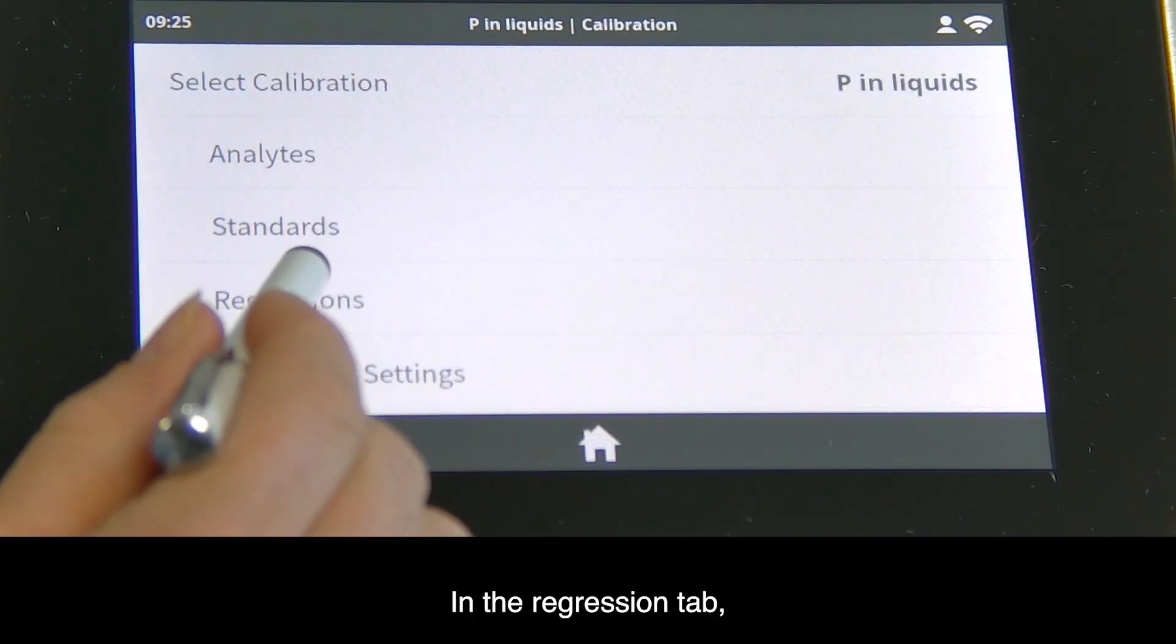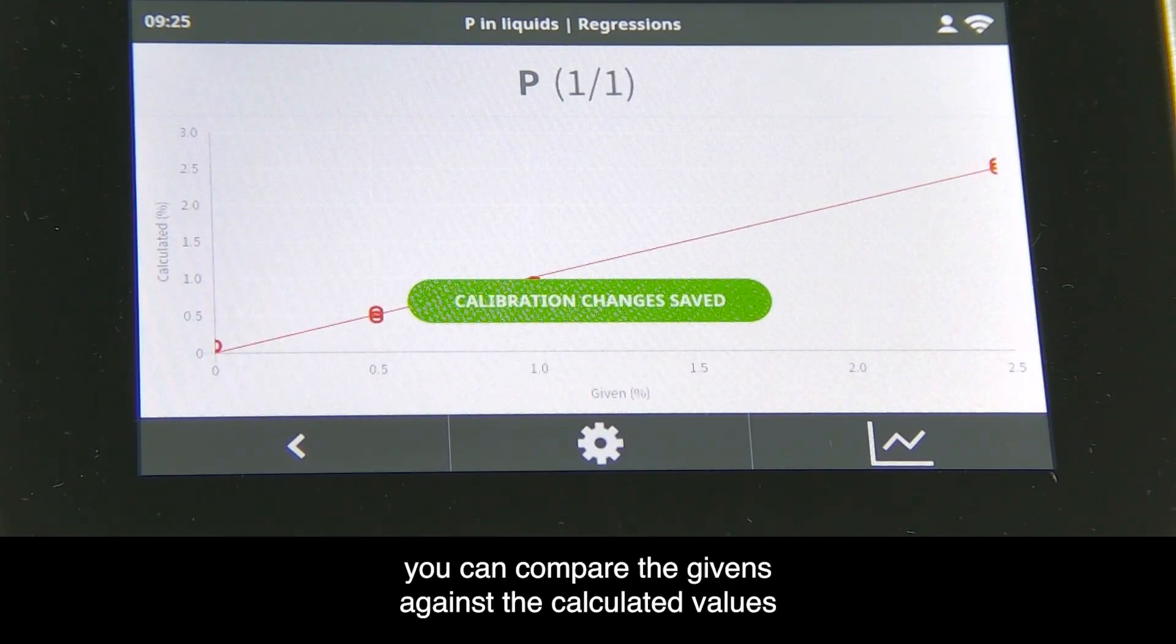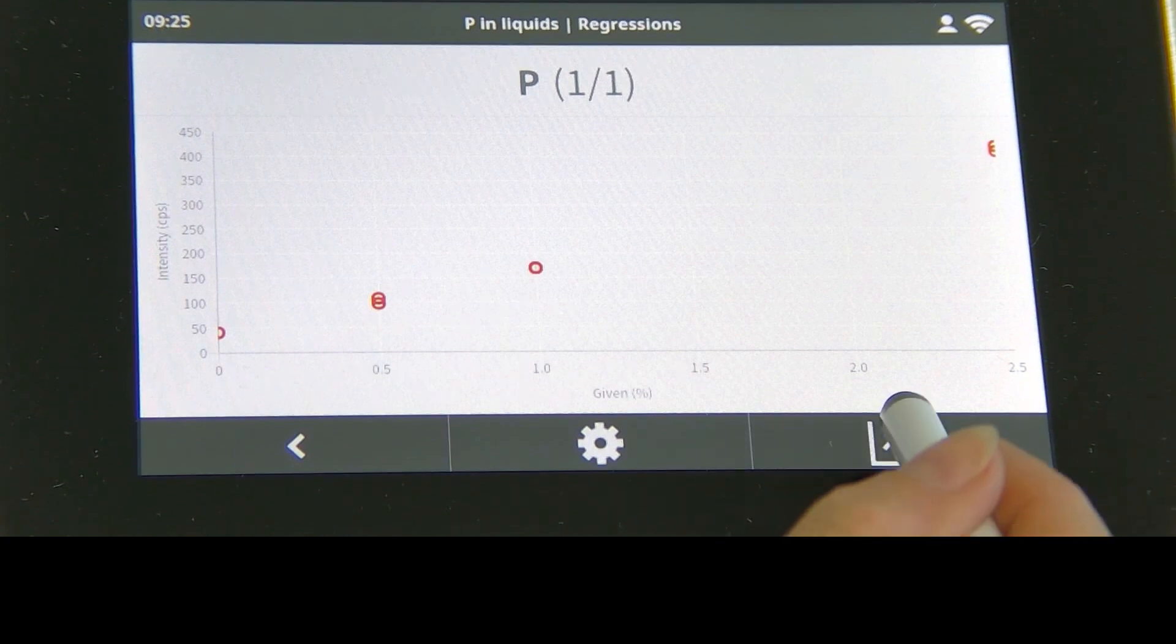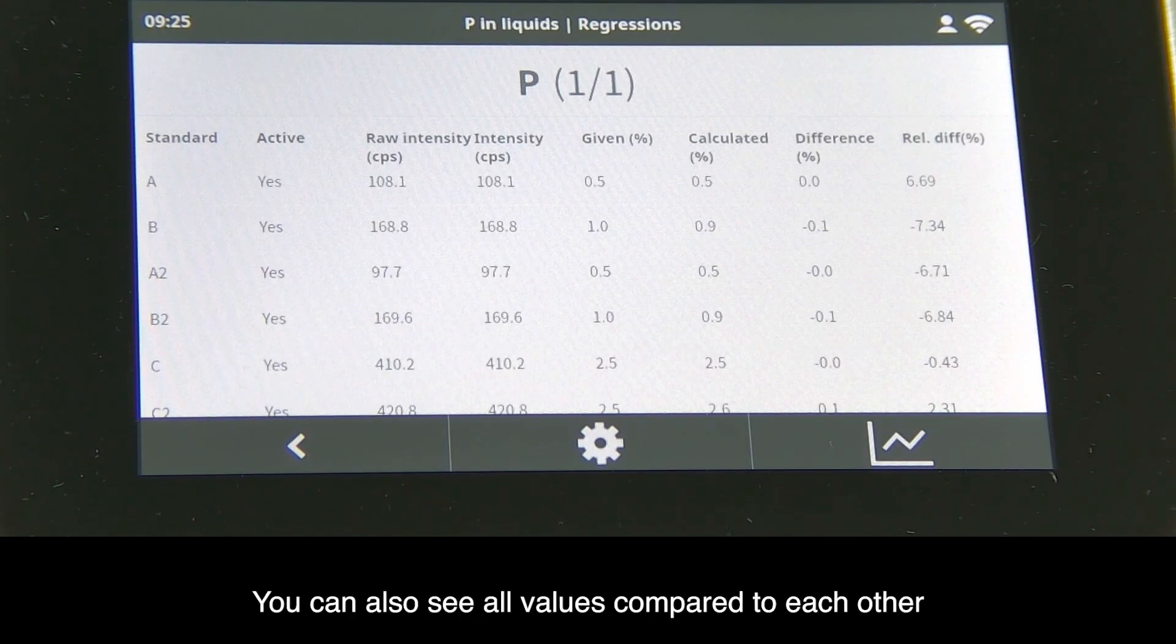In the regression tab you can compare the givens against the calculated values or the givens against the intensities for your phosphorus. You can also see all values compared to each other.